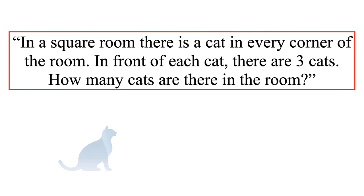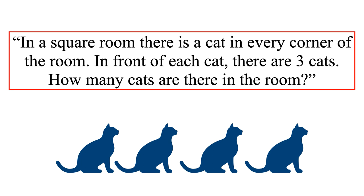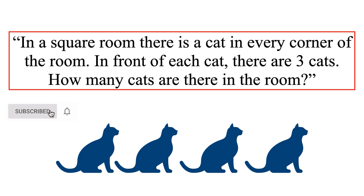The riddle states that in a square room there is a cat in every corner, and there are three cats in front of each cat. The riddle asks the total number of cats present inside the square room. Can you solve the riddle? Nowadays you can find many social media platforms flooded with such fun games and riddles that will keep you away from boredom for a long time. Feel free to pause the video and let everyone know your answer in the comment section.